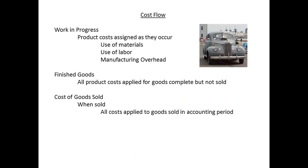Costs will flow through the work accounts as each job is completed. As work is in progress, it accumulates materials costs, labour costs, and manufacturing overhead, until it reaches the stage of being a finished good.